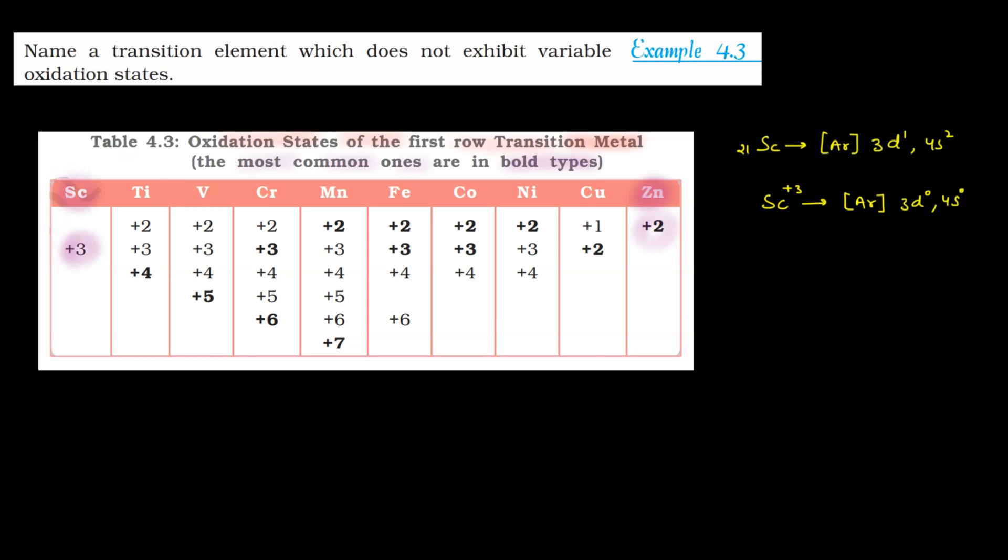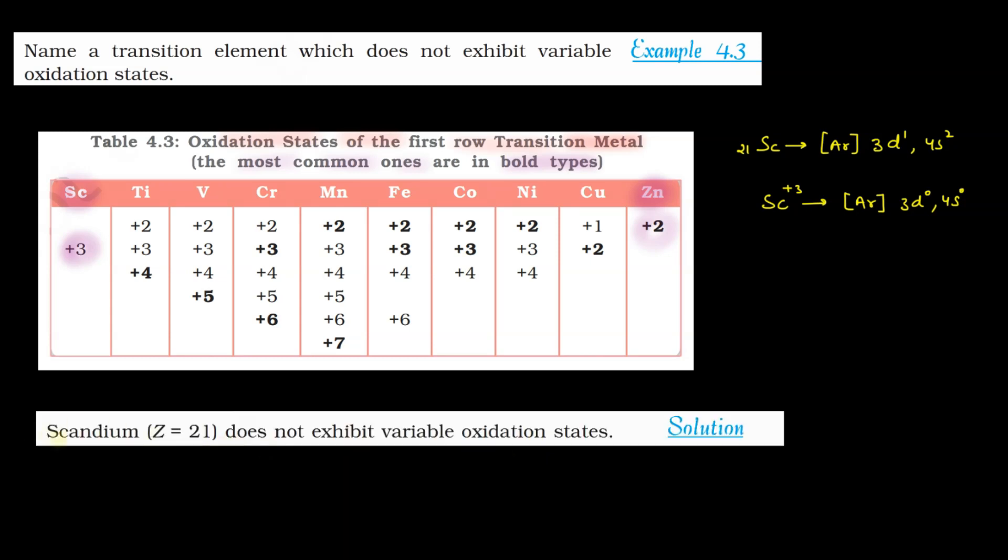To NCERT mein iska solution kya given hai aapko, wo bhi dekh lenge saath-saath. So here the solution is, scandium Z = 21, 21 is the atomic number of scandium, does not exhibit variable oxidation states. This is the answer for this example.